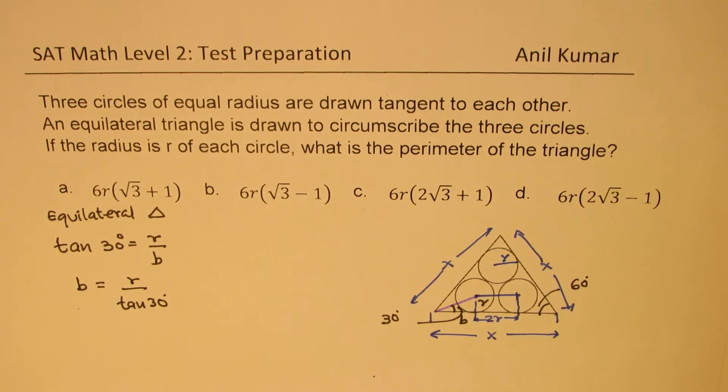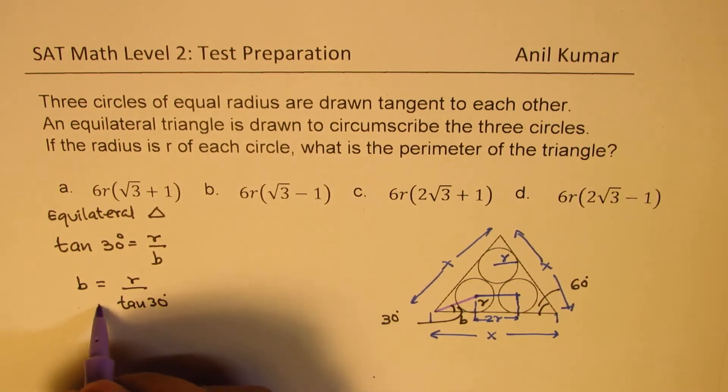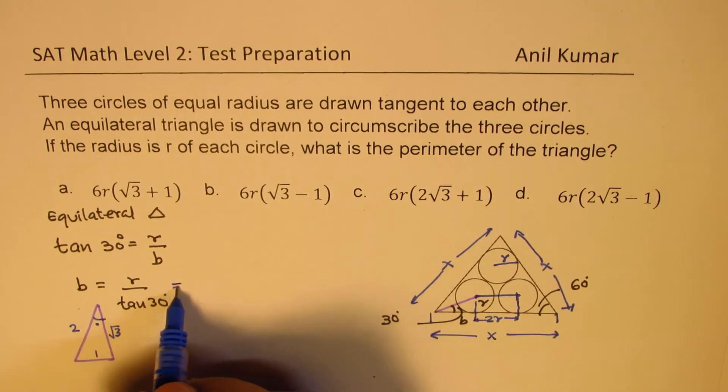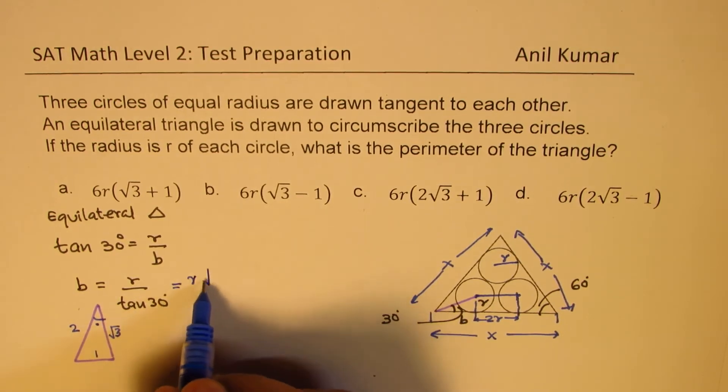And how do you find tan of 30 degrees? Special triangle, perfect. So this special triangle, you know, 1, 2, square root 3. And that is the angle which we're talking about. Tan is 1 over square root 3. So you could write this as R times square root 3.